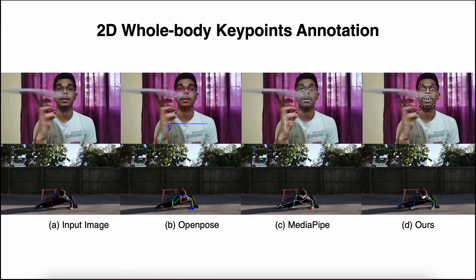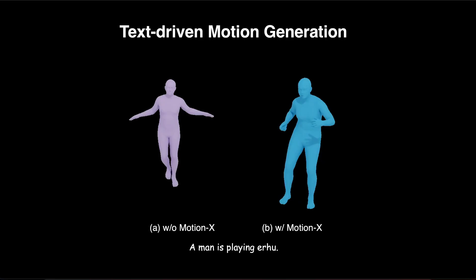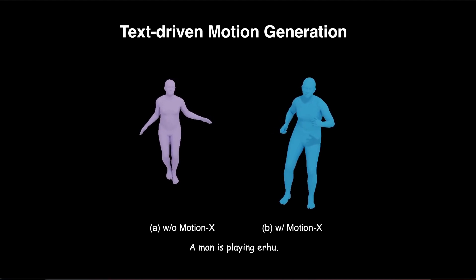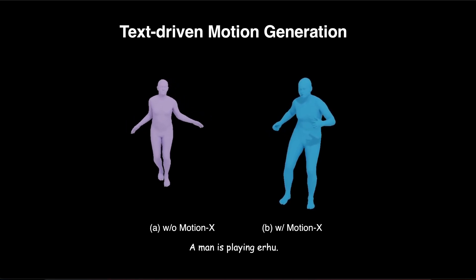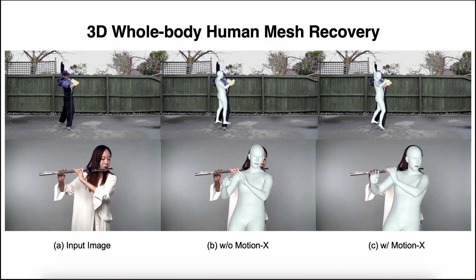To demonstrate the quality of our annotation pipeline, here we show some comparisons with existing keypoints and SMPLX annotation methods. We conduct experiments on the text-driven motion generation task. Using the MLD model trained on MotionX will boost the motion-text alignment and generate more diverse motions. We also verify it on the whole-body human mesh reconstruction task to help the model's generalizability.